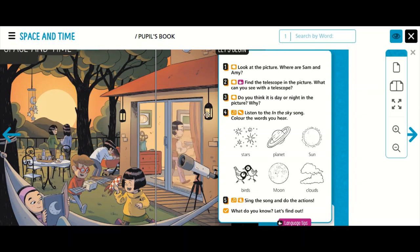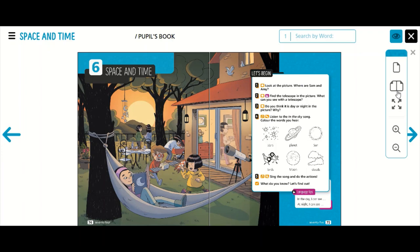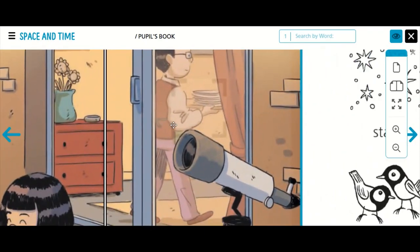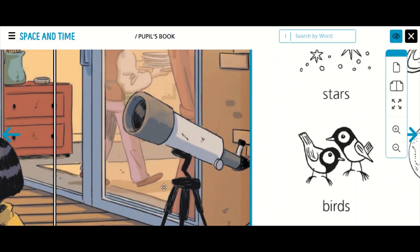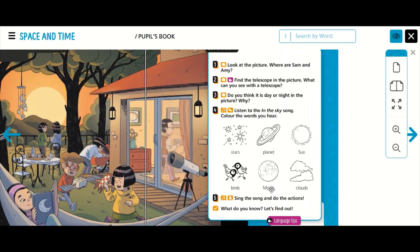Number 2. Find the telescope in the picture. What can you see with a telescope? Can you see the telescope in the picture? Good. Do you remember this object? It's a telescope. A telescope is an object to study the space. At night, we can see the stars with the telescope. At night, we can see planets with a telescope. So, it's a very important instrument to study the space.